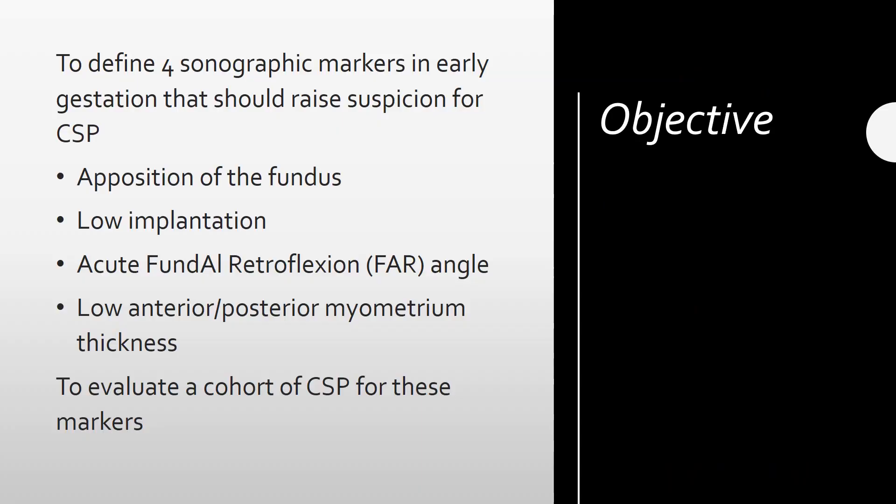The objective of this study is to define four sonographic markers in early gestation that should raise suspicion for a cesarean scar ectopic pregnancy, and to evaluate a cohort of CSP for these markers. The four markers are: 1, presence of fundal apposition; 2, low implantation of the gestational sac; 3, presence of an acute angle of fundal retroflexion or the far angle; and 4, a low anterior to posterior myometrial thickness ratio. I will explain each of these markers in more detail.